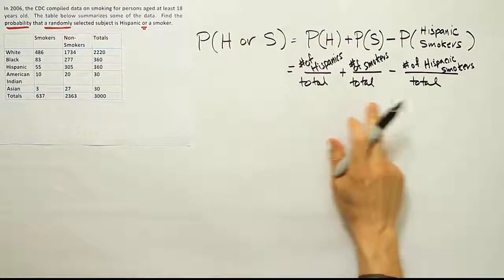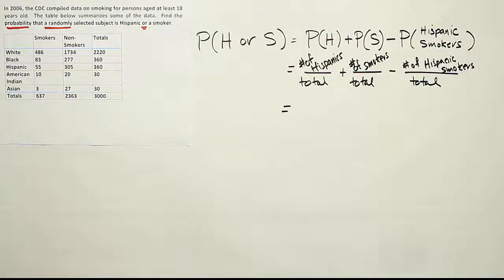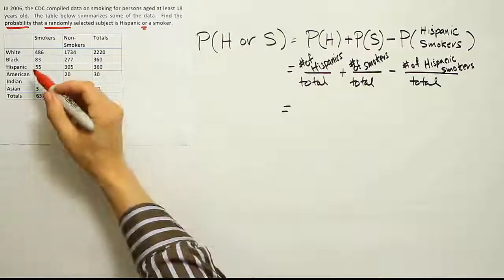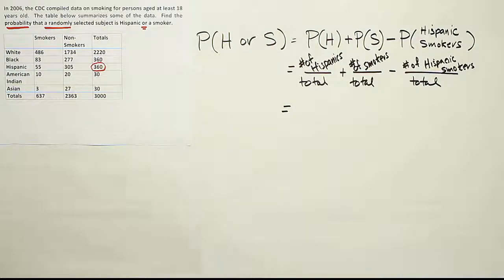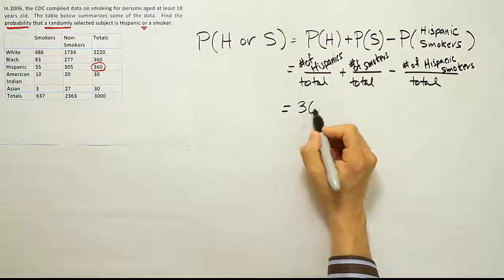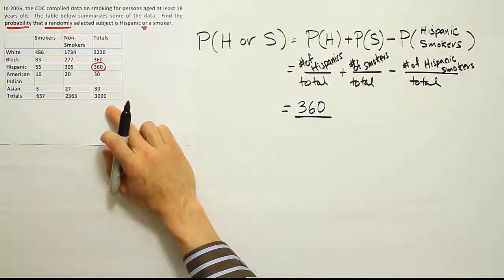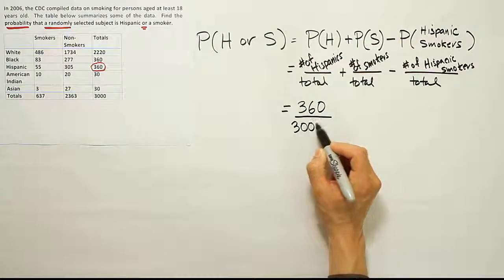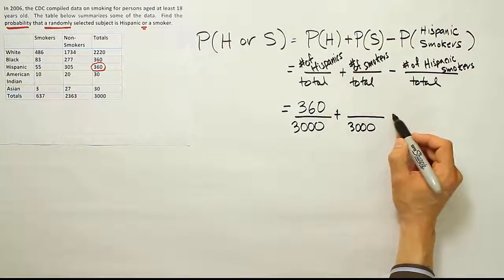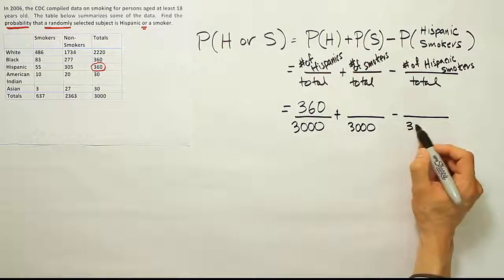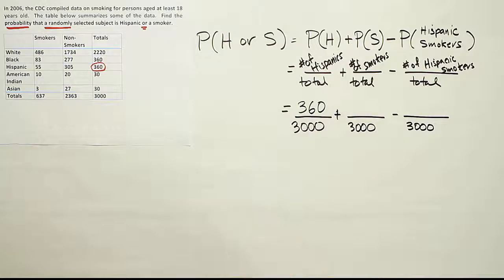So I need the number of Hispanics total. Well, when I look at the table, I can figure that out. Hispanics is this column, and the total here is 360. So I should put 360 there for the number of Hispanics. The grand total is the 3,000. There are 3,000 people in this study. That's the total number of people involved. So I'll put that as my denominator. And in fact, because as I said before, each fraction has the same denominator in addition rule, whenever you're grabbing just one subject, then I can keep that 3,000 straight across. I don't have to worry about that anymore.